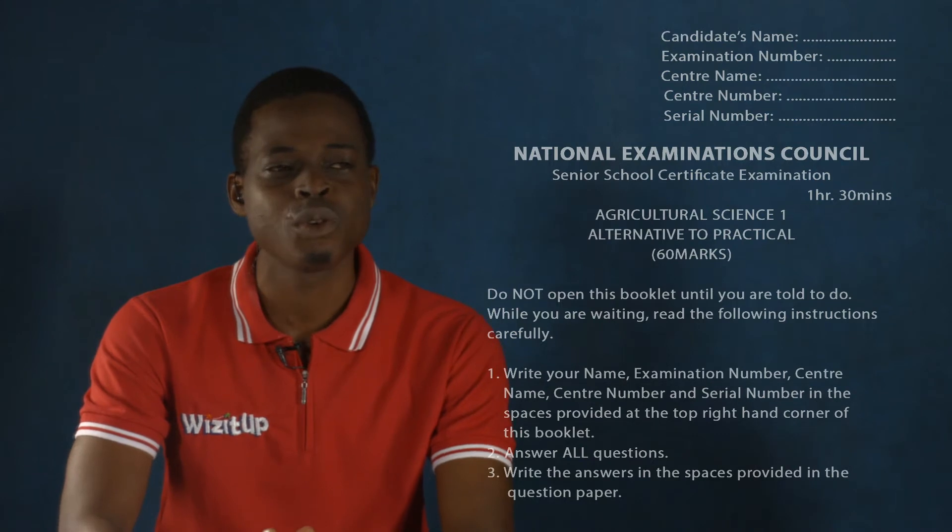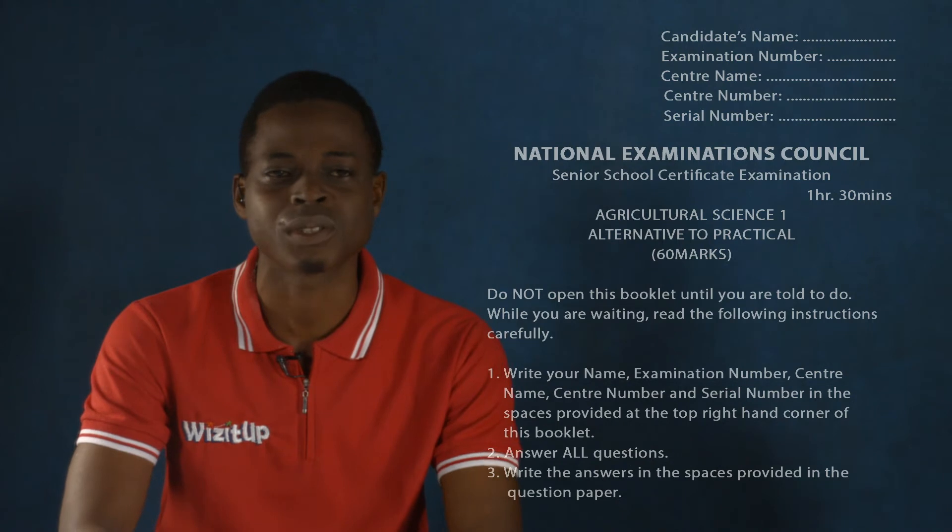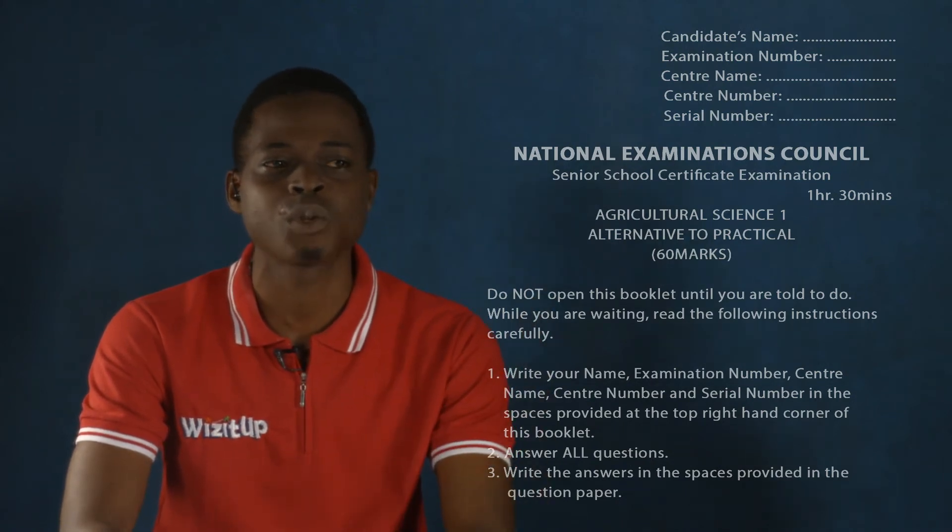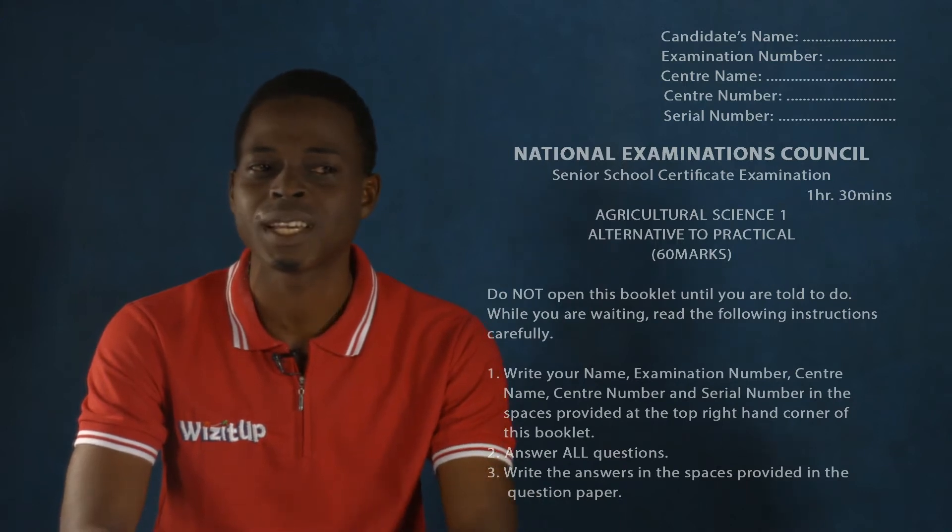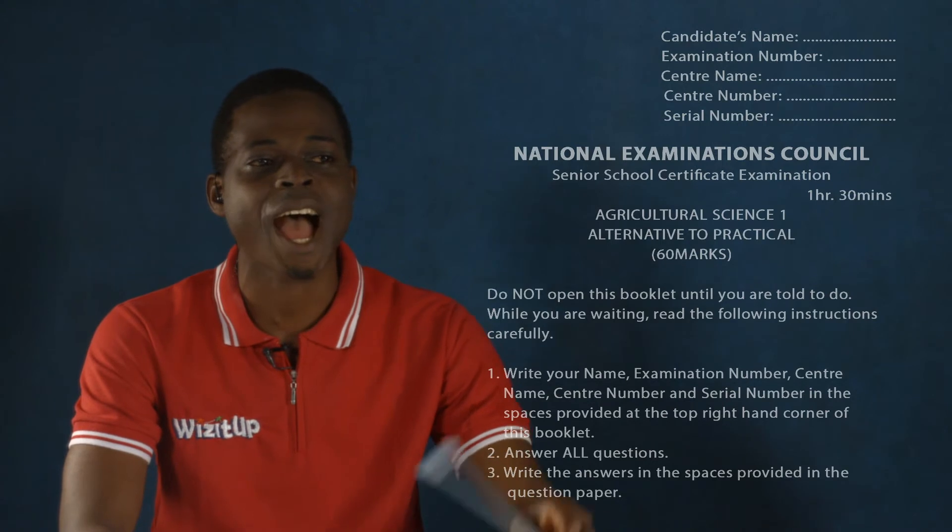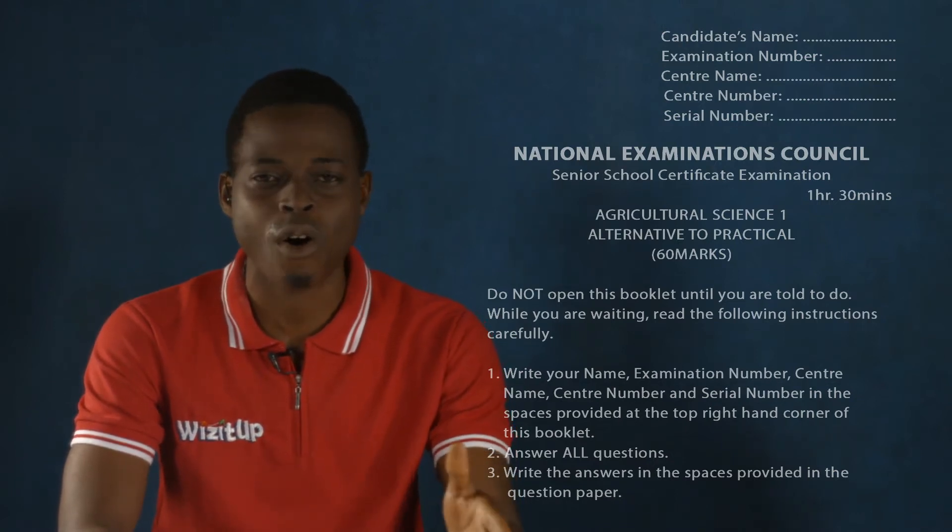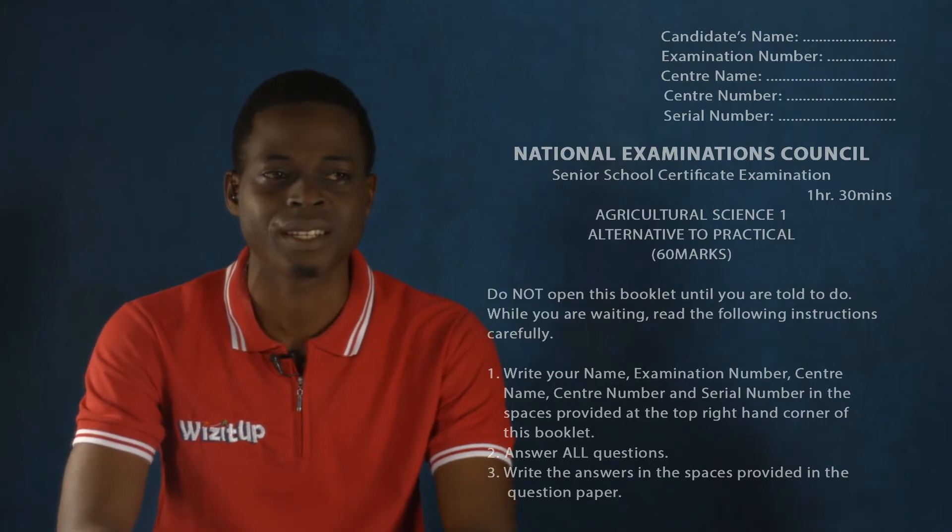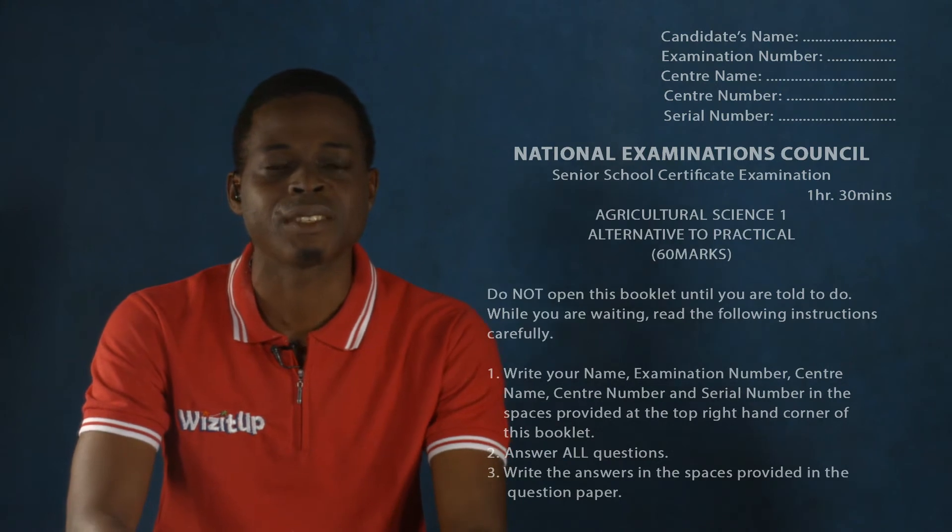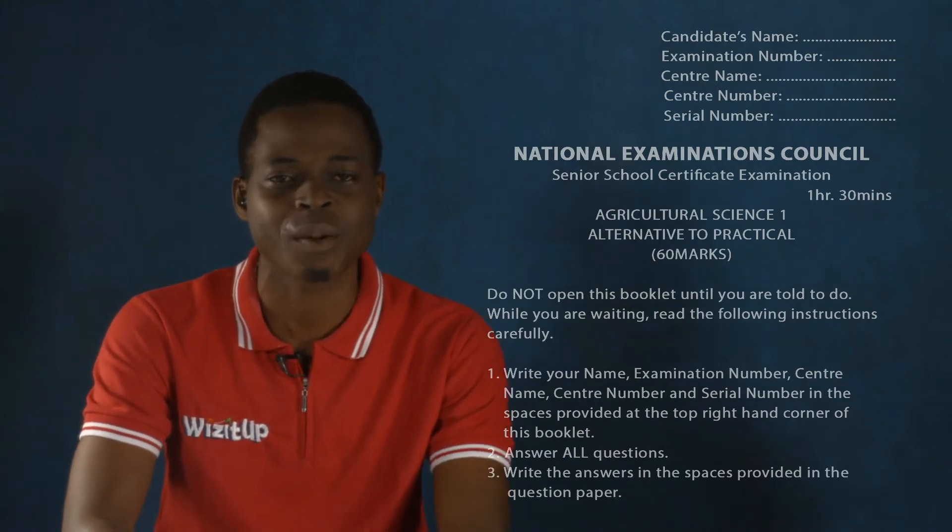But before you proceed, in the real life situation, you are going to realize that you have to read the instructions. Here we have do not open this booklet until you are told to do so. And while you are waiting, read the following instructions carefully. The first one is that write your name, examination number, center name, center number, and serial number in the places provided at the top right-hand corner of this booklet.